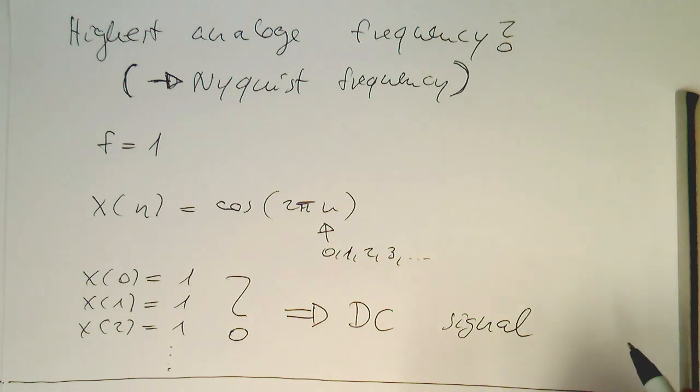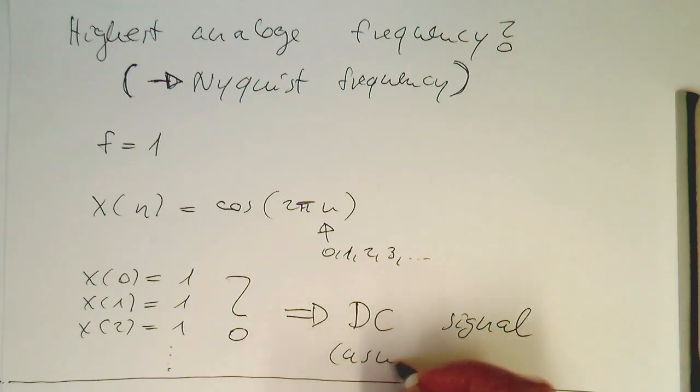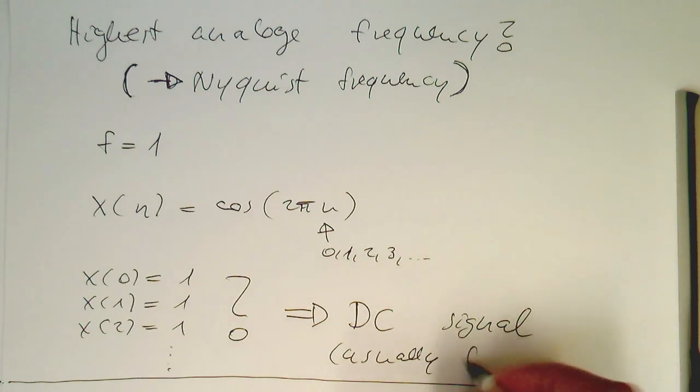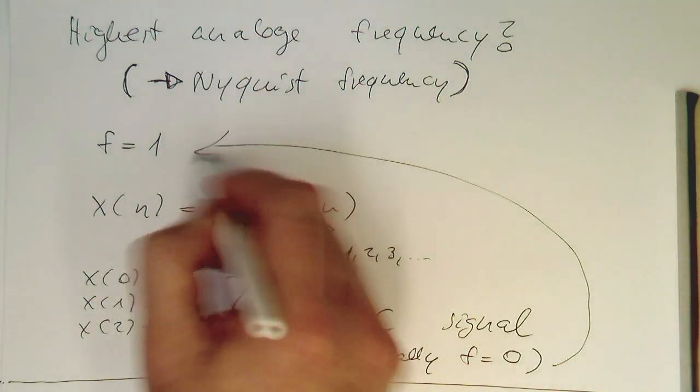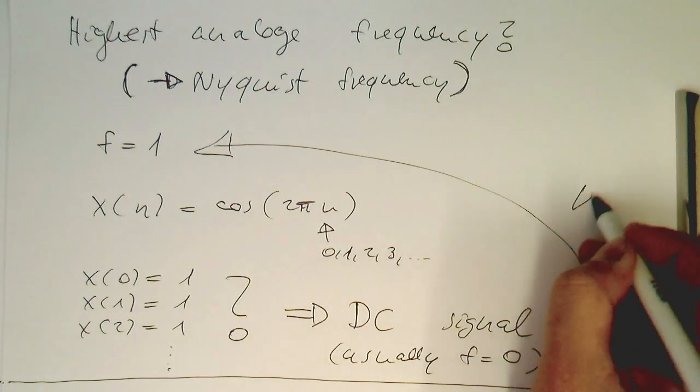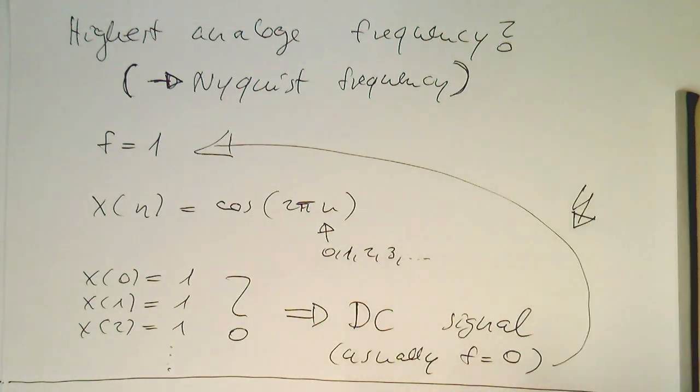So now remember that the DC would be usually defined by f equals 0, so 0 frequency means DC. So now the problem is we have also the f equals 1, which is generating also a DC. So this means we are getting here so-called ambiguity.